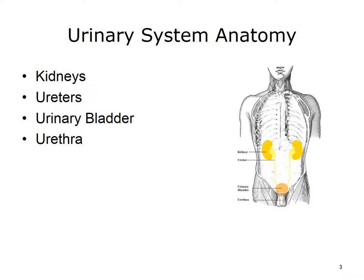The kidneys are bean-shaped organs each about the size of your fist. They are located near the middle of the back, just below the rib cage. Inside each kidney, there are about a million tiny structures called nephrons, which filter blood. They remove waste products and extra water, which become urine. The urine flows through tubes called ureters to the bladder, which stores the urine until it is passed through the urethra. The urethra is a canal extending from the bladder to the outside of the body.